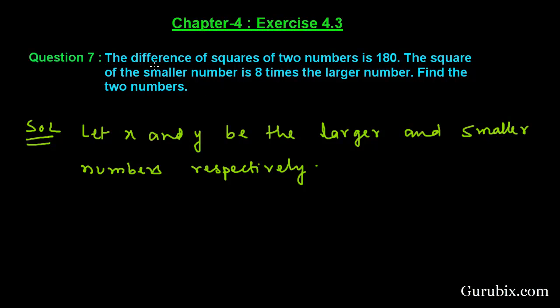We are given that the difference of the squares of the two numbers is 180. This means if we find the square of the larger number and subtract the square of the smaller number from it, then we have 180. We are also given that the square of the smaller number, y square, equals 8 times the larger number, which means y² = 8x. So suppose this is our equation number 1 and this is our equation number 2.